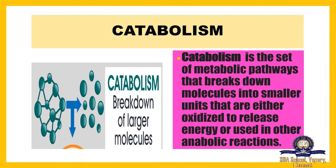Catabolism is also a metabolic pathway — it involves breaking down molecules into smaller units, either exergonic or releasing energy. All these processes give our body energy. Cells are involved in breaking down both smaller and larger molecules with the help of oxygen to produce energy in the form of ATP.